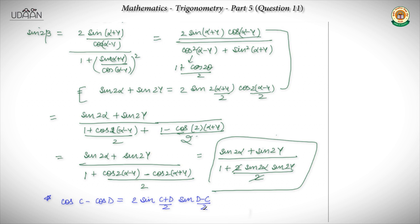Don't worry about trigonometry — there are always many formulas. With practice, you will understand the form of a question and know which formula to use. In every question, we have simplified tan β and taken things to sin and cos terms, since we are naturally more comfortable in sin/cos form. We combined these little steps and finally proved it. That was question number 11.